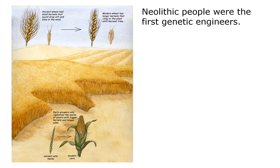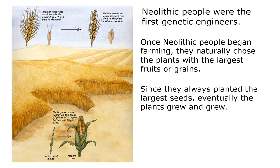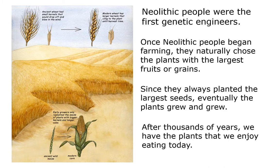Neolithic people were the first genetic engineers. Once they began farming, they naturally chose the plants with the largest fruits or grains. Since they always planted the largest seeds, eventually the plants grew and grew. After thousands of years, we have the plants that we enjoy eating today.